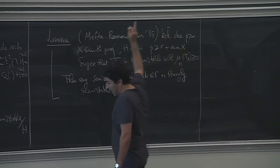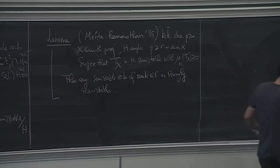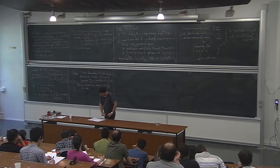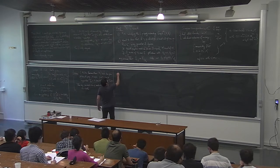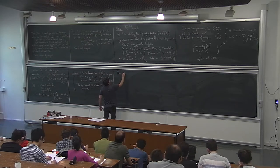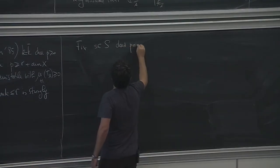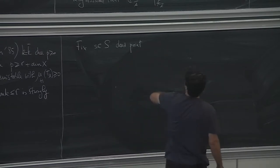If you do not assume that X is smooth, one of the difficulties comes from this statement, because we don't have this statement for singular varieties, so we have to do something a bit different. But now we have what we need to prove the p-closeness. Let's see. You start with s, a closed point.